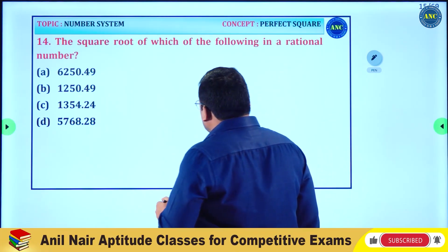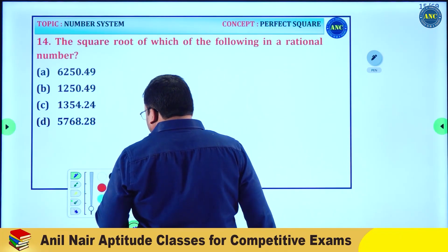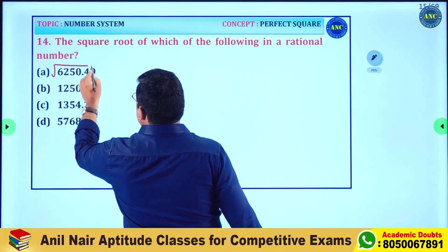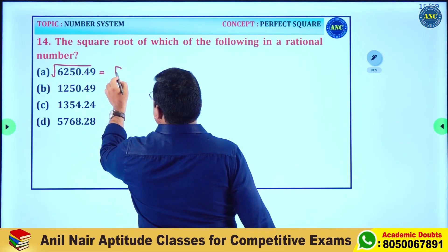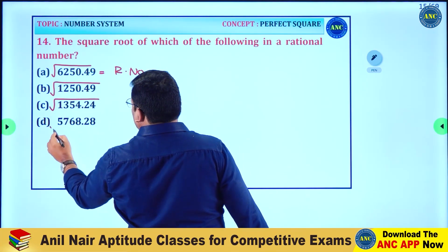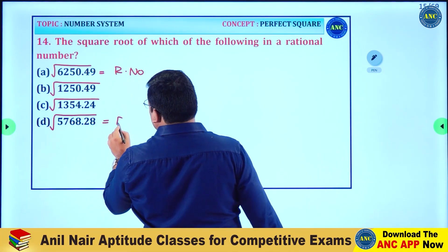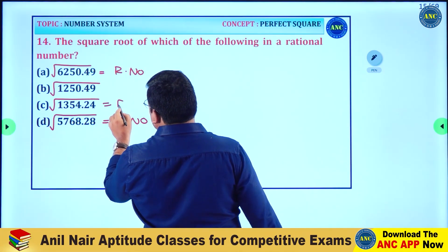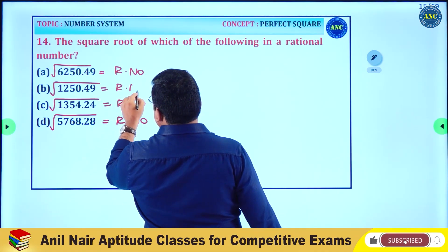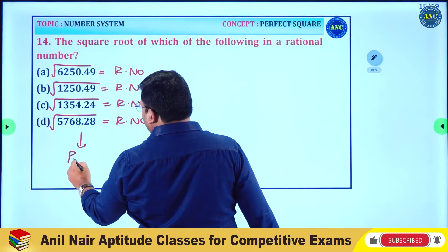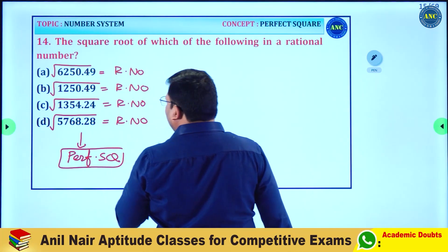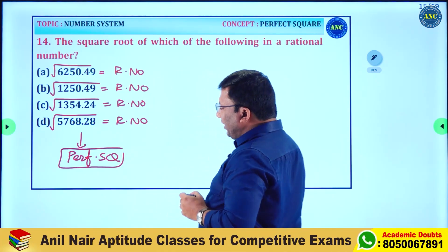Concept number three: the square root of which of the following is a rational number? The answer will be a rational number when the number inside the square root is a perfect square. The number present inside should be a perfect square.